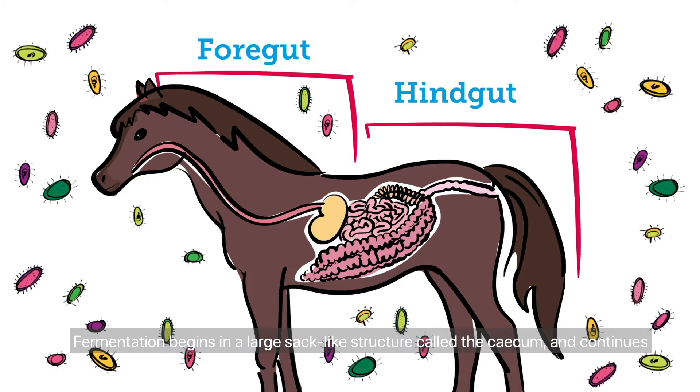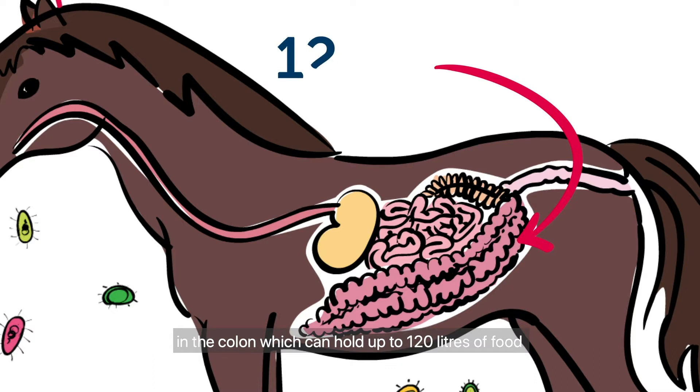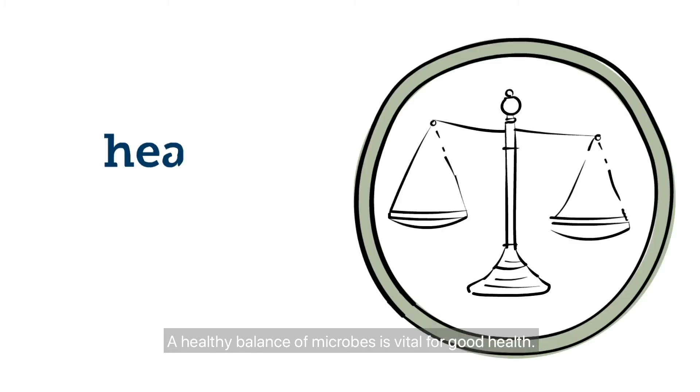Fermentation begins in a large sack-like structure called the cecum and continues in the colon, which can hold up to 120 litres of food and fills the back of the horse's abdomen. A healthy balance of microbes is vital for good health.